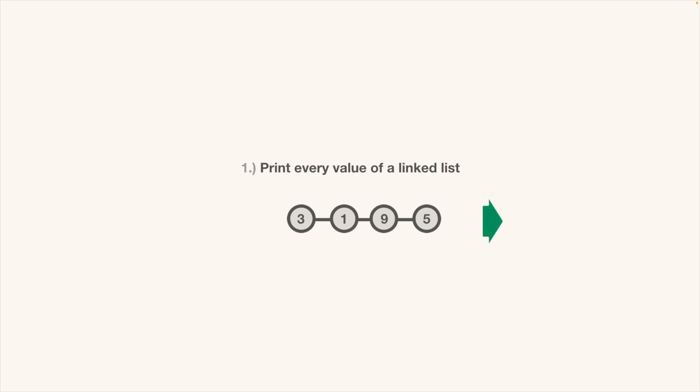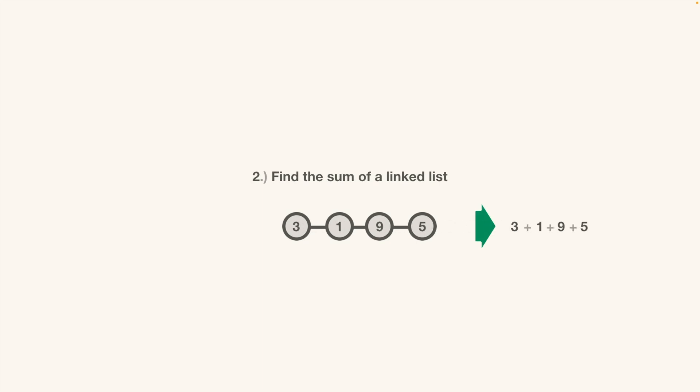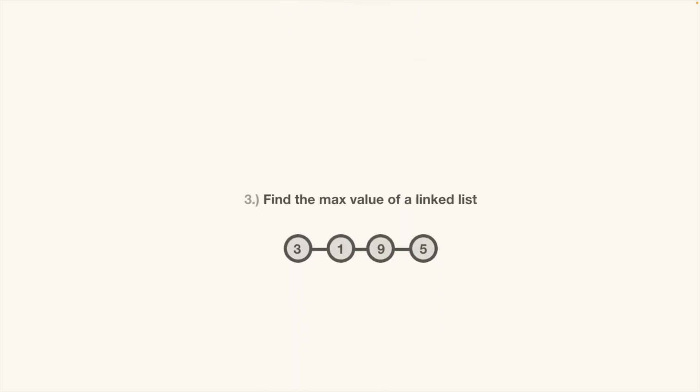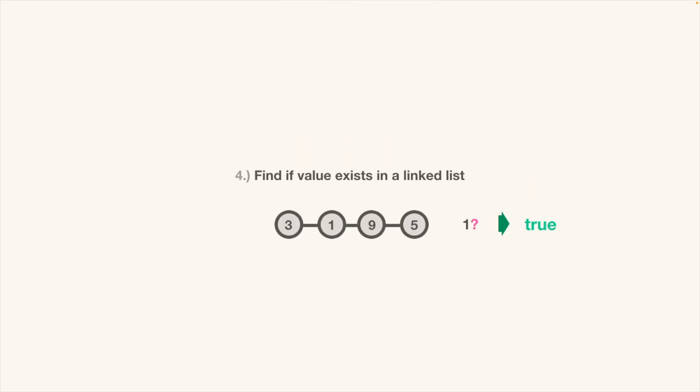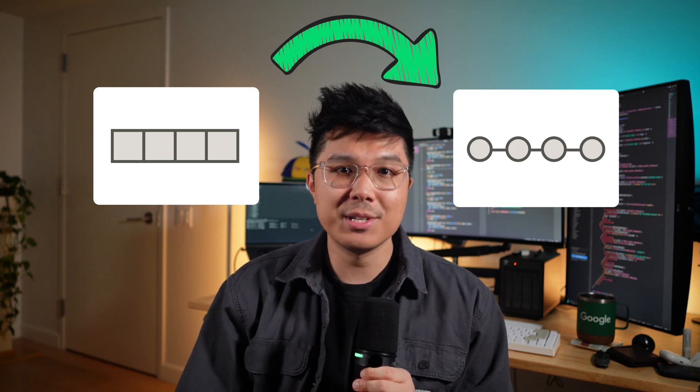Now let's say arrays are easy for you and you want to learn linked lists. Here are the four linked list problems you should start with. Problem one: print every element of a linked list. Problem two: find the total sum of a linked list. Problem three: find the maximum value of a linked list. Problem four: find if a value exists in a linked list. Sound familiar? These problems require the same logic as before, but for a different data structure. This is where the magic of gradual progression happens — the logic from the array problems will directly translate to the logic of the linked list problems.